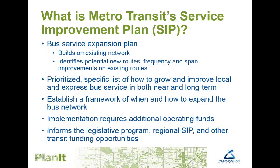Metro Transit's Service Improvement Plan, or SIP, is a comprehensive list of bus improvements that are prioritized to best meet regional goals. Completed in 2014, it is a long-range plan that will be updated every four to five years. The Met Council's plans for transit growth are laid out in the 2040 TPP, and the SIP does a similar level of future planning for local and express buses. Projects identified in the SIP are not included in the existing operating budget, but projects in the SIP were included in the Council's 2015 Legislative Program, helping to make the case for additional transit funding.